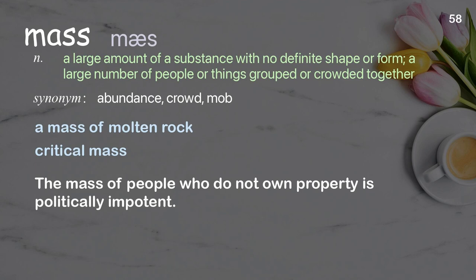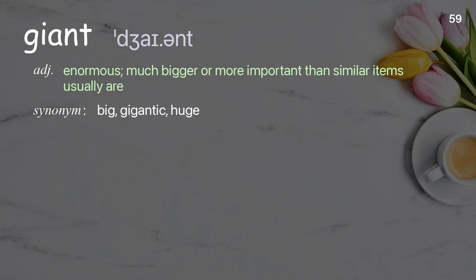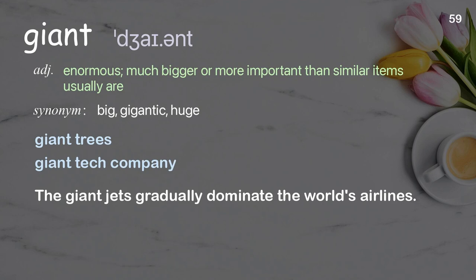Giant: extremely big; much bigger or more important than similar items usually are. Examples: giant trees, giant tech company. The giant jets gradually dominate the world's airlines.